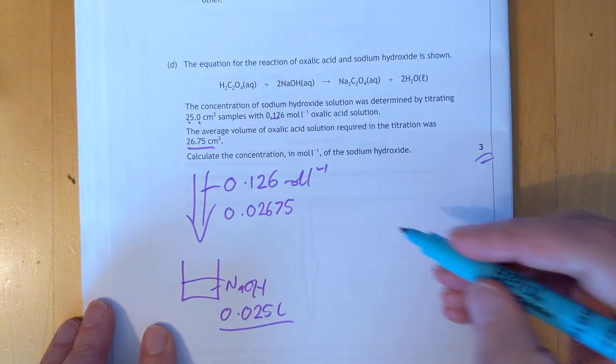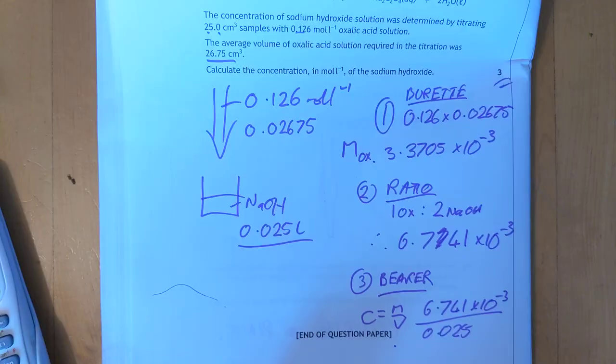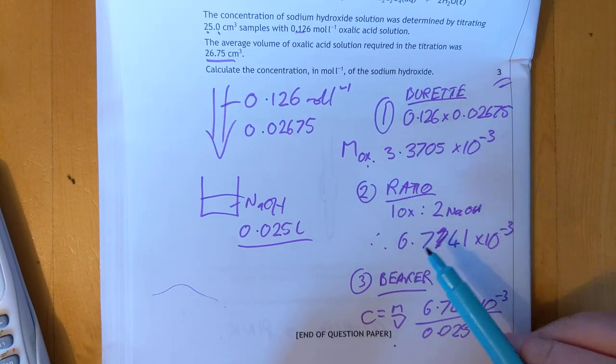Calculation for titrations. Three stages. Stage one. Dripped out the burette. So I'm going to pause this. Okay. Stage one. Moles are dripped out the burette. Concentration times volume. Gives us the moles of oxalic acid.